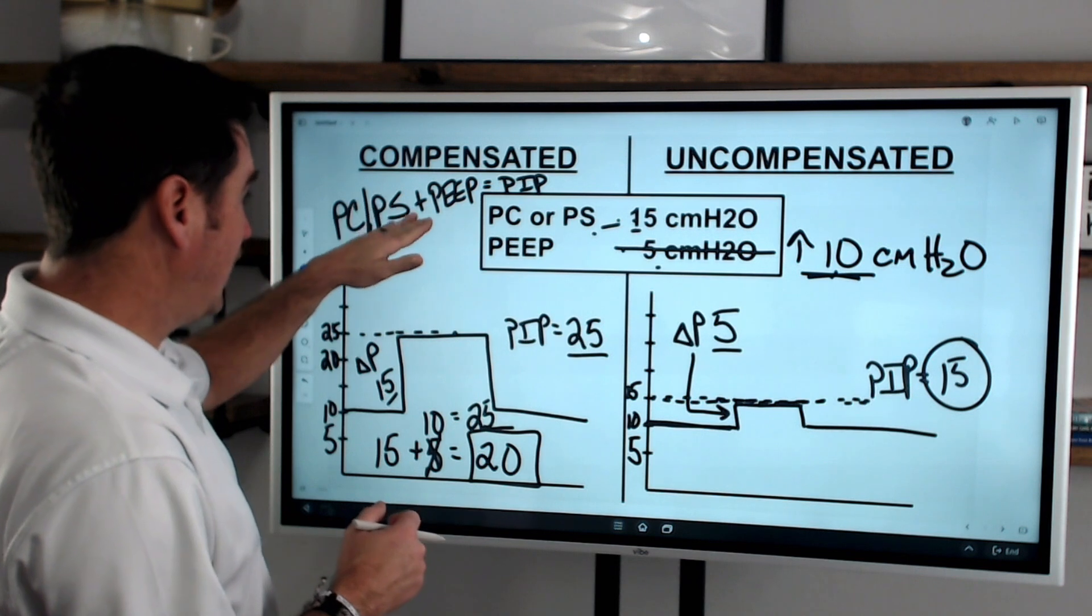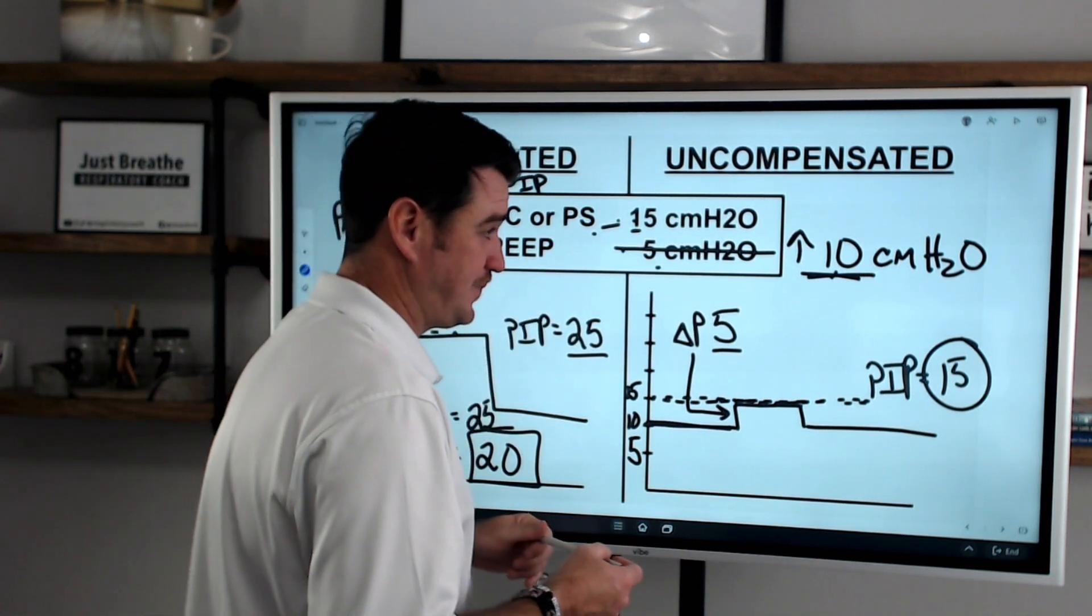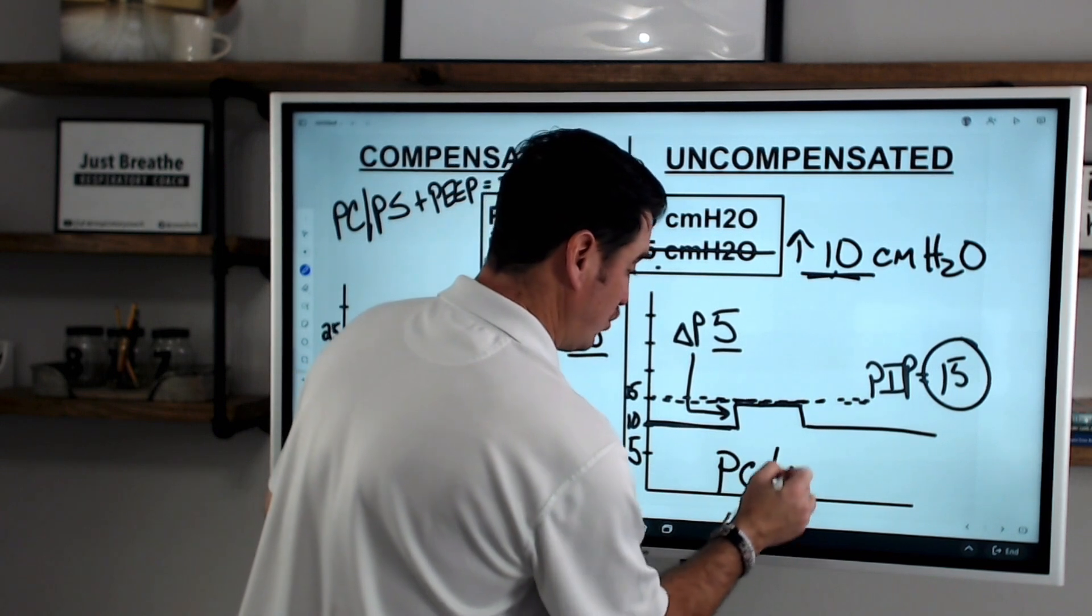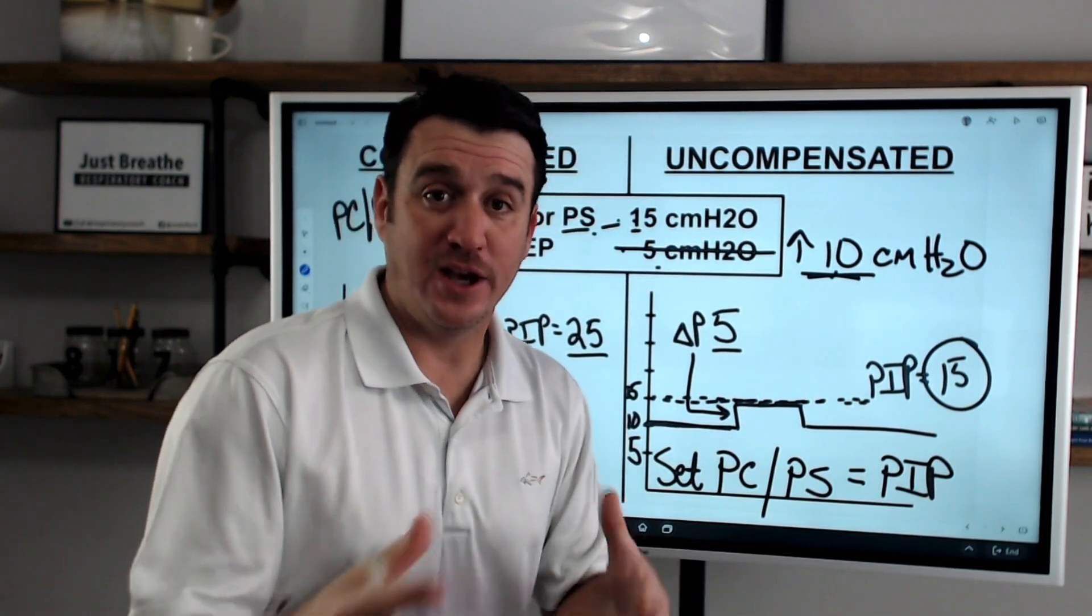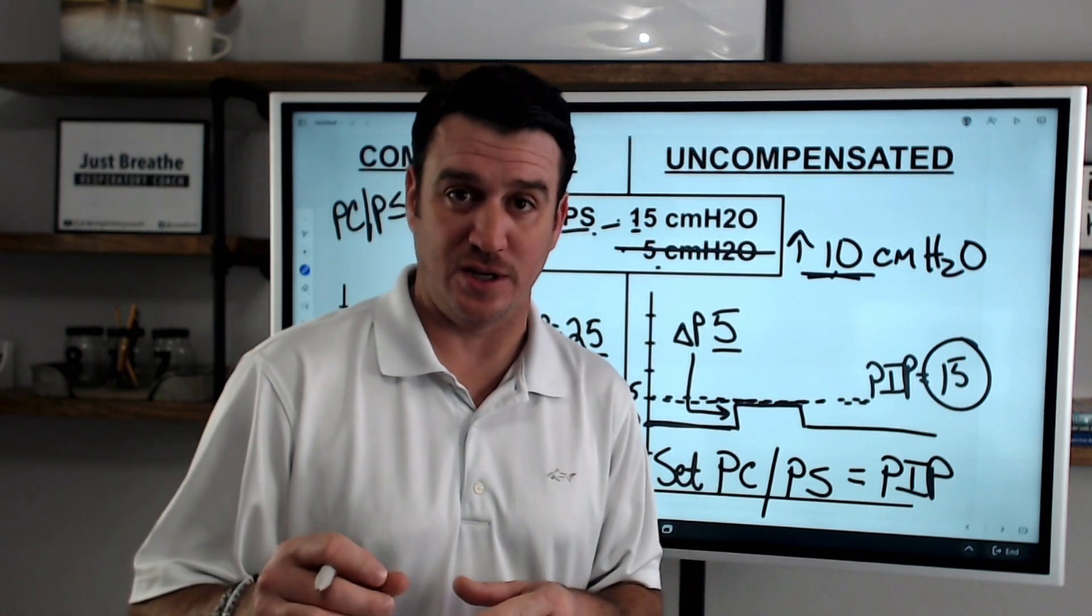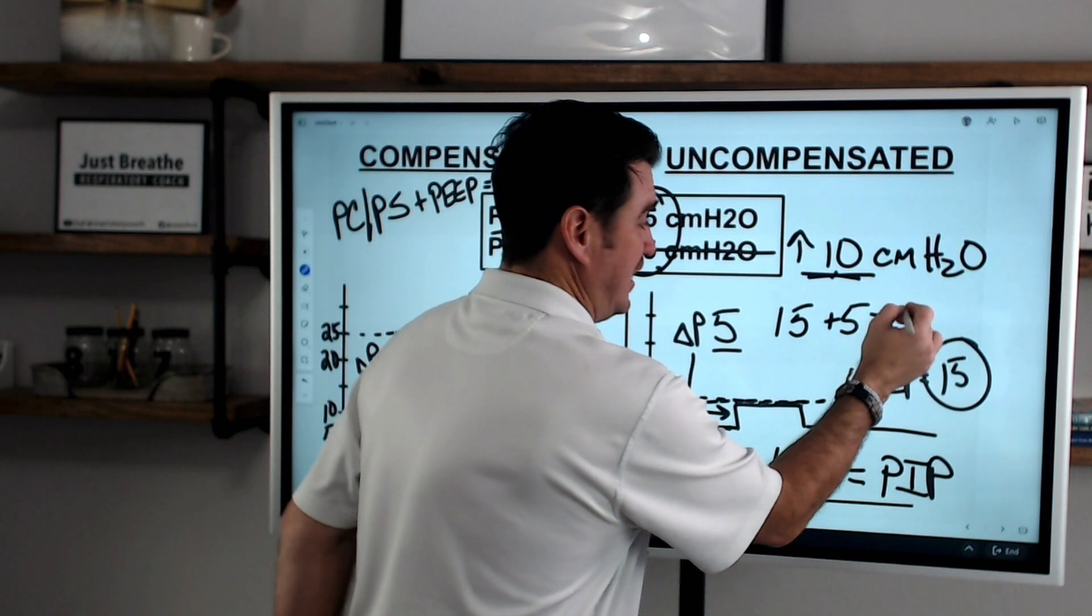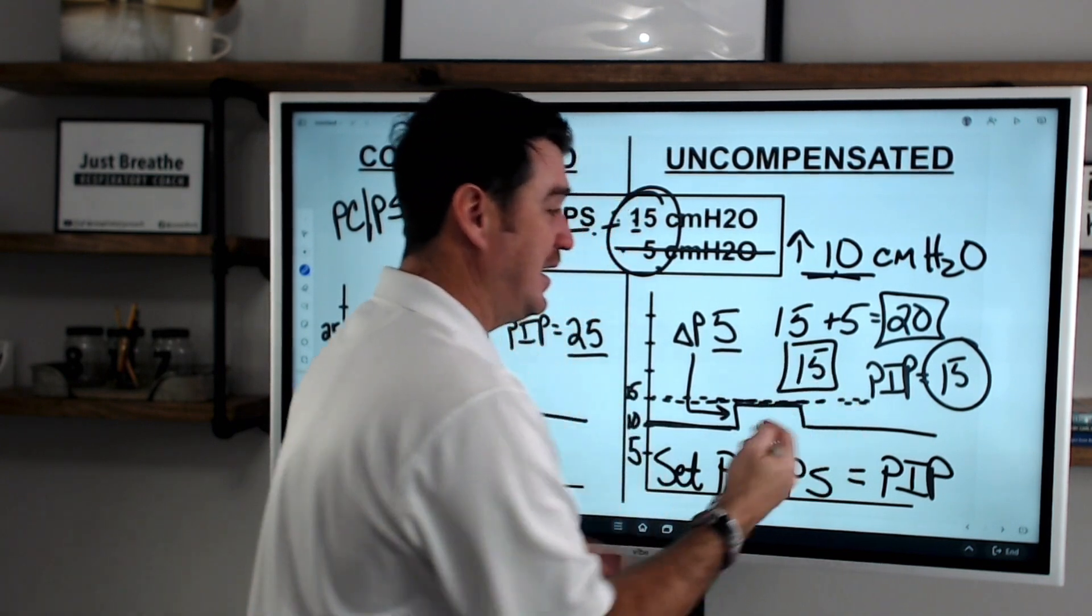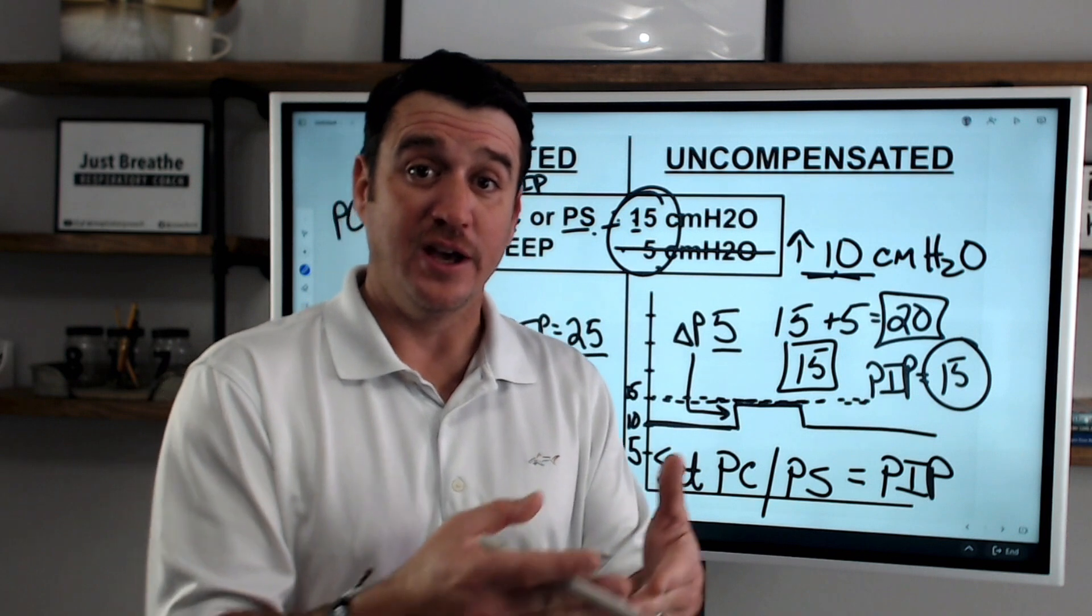If you're working with an uncompensated ventilator, then your set pressure control or pressure support equals your PIP. So it doesn't matter what your PEEP is. Your pressure control, your pressure support is going to cut off when that inspiratory pressure is reached. So if you're on 15 over 5, and you're thinking, oh, I should be at an inspiratory pressure of 20, a PIP of 20, but your inspiratory pressure is only 15, then you know now that you're working with an uncompensated ventilator and you need to double check and make sure that you have your settings set correctly.